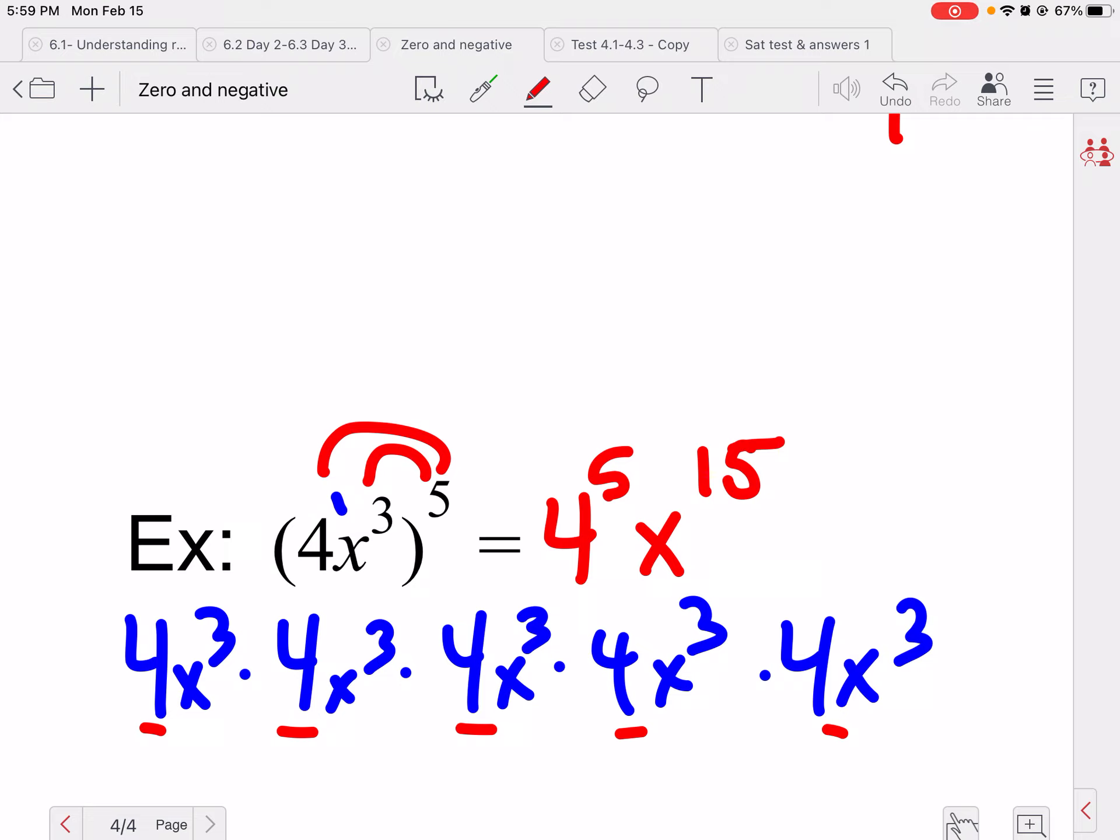So I need to distribute that five to the one and the three. So this becomes four to the fifth x to the fifteenth. So you have to distribute to every piece inside of there that would be separated by a multiplication sign, because remember there's a little tiny invisible multiplication sign between four and x.